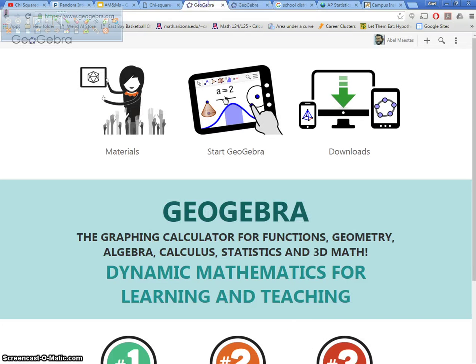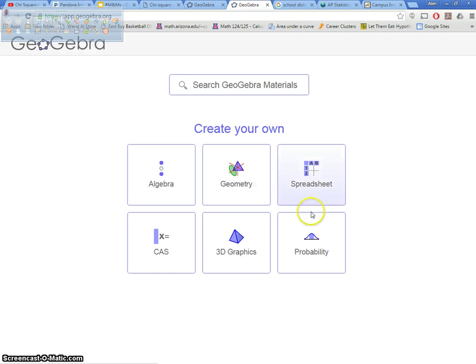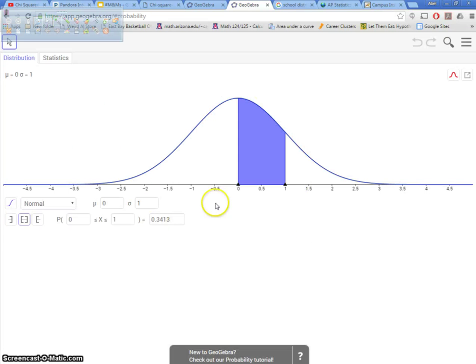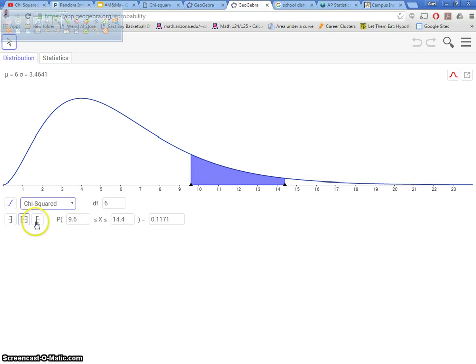In GeoGebra, I'm going to start the probability calculator. My computer is a little slow, so give it a few seconds. When I start GeoGebra, I'm going to look for the probability one. Notice it starts with a normal model. I'm going to click chi-squared model. I'm going to always do chi-squared greater than, with this bracket here, because that's what we're doing for any chi-squared test.